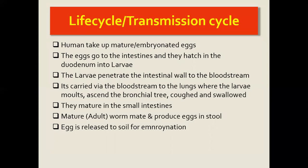The larvae then start climbing up the respiratory tract, going up the bronchial tree until they are coughed up and swallowed. Once swallowed, they go back to the intestines, where the larvae mature into adult worms. This is the second time they are in the intestines. The adult worms then mate and produce eggs.